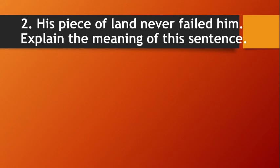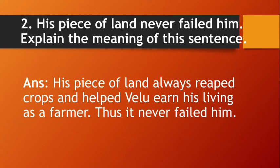Question number two: 'His piece of land never failed him' — explain the meaning of this sentence. It means his field had always yielded crops and helped him earn his livelihood. His piece of land always reaped crops and helped him make a living as a farmer, thus it never failed him.